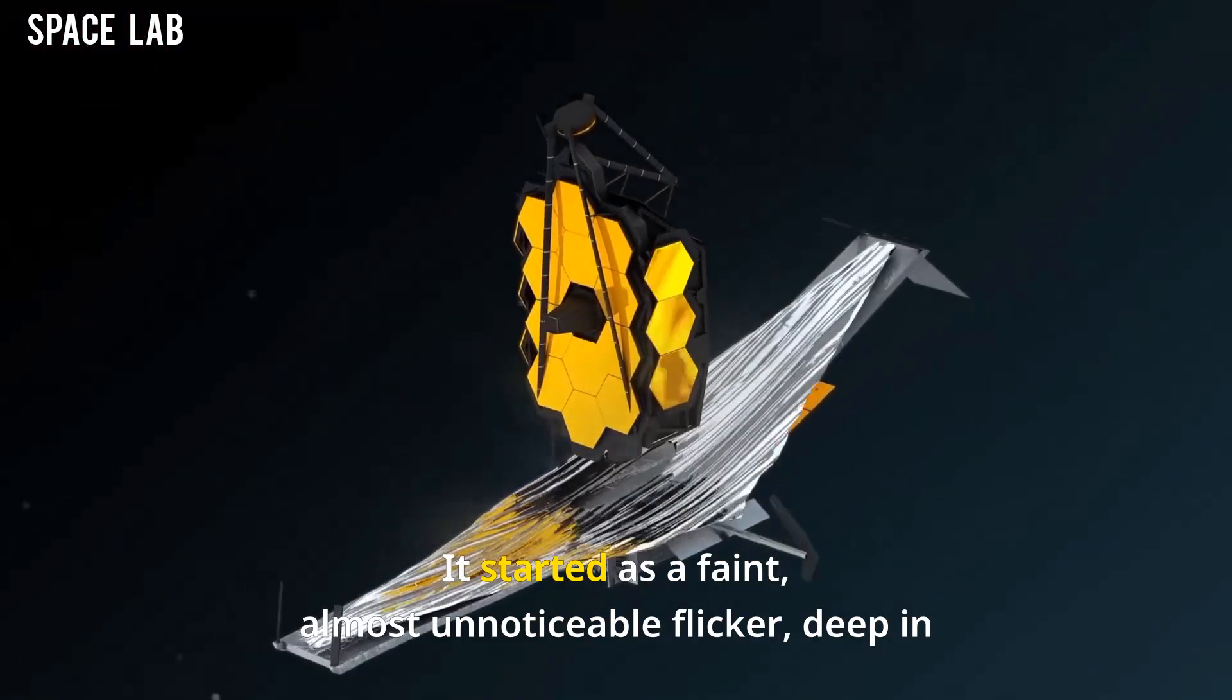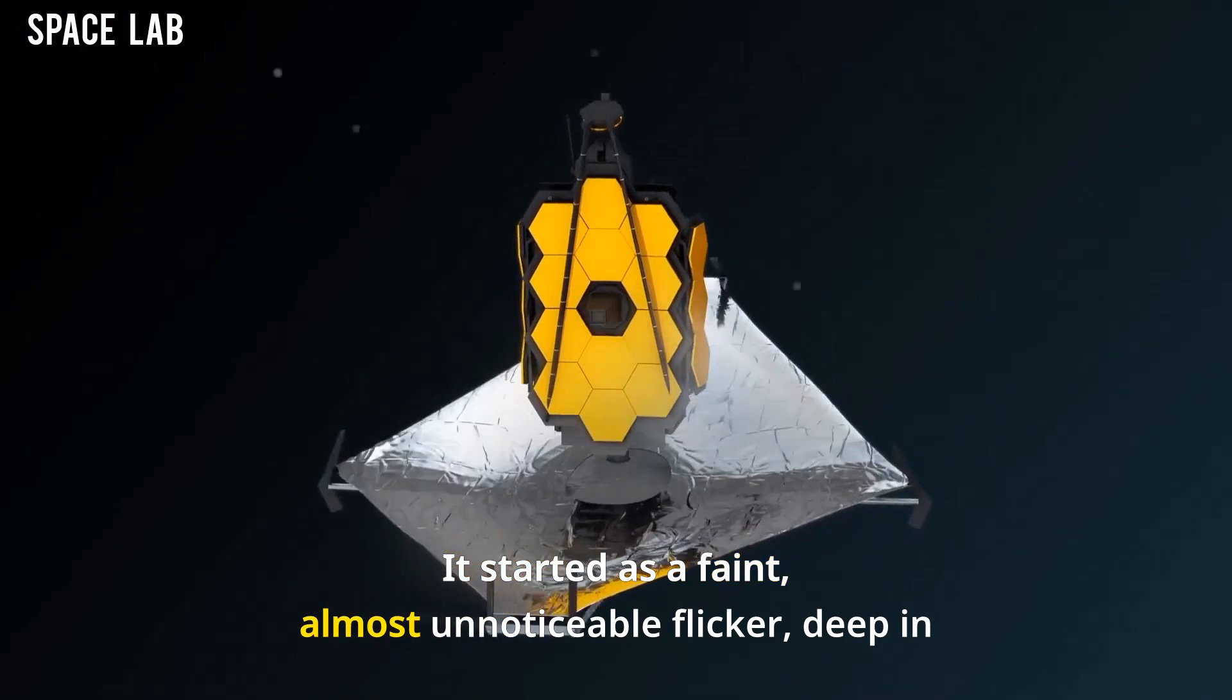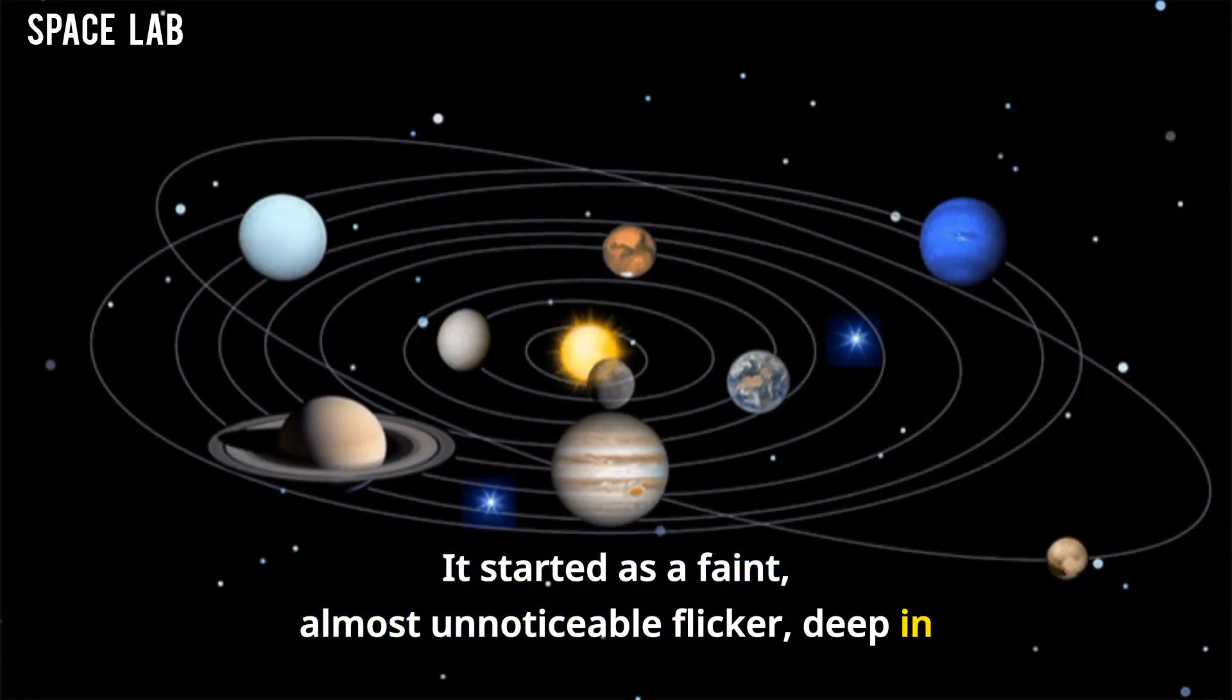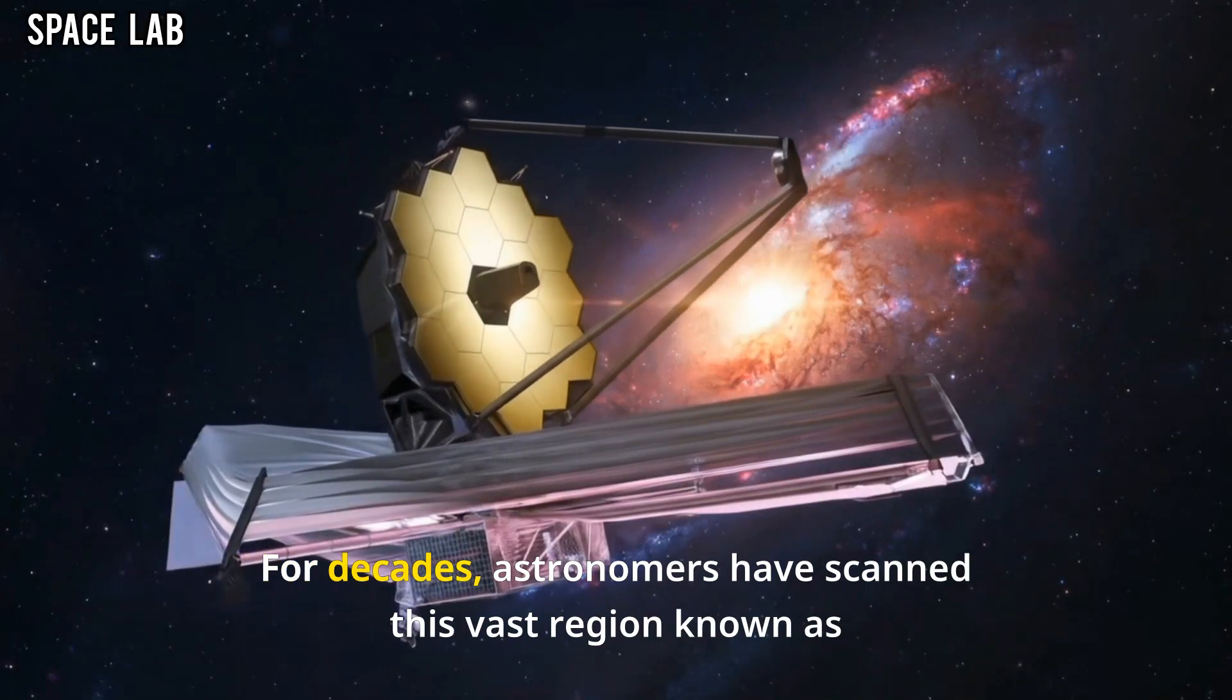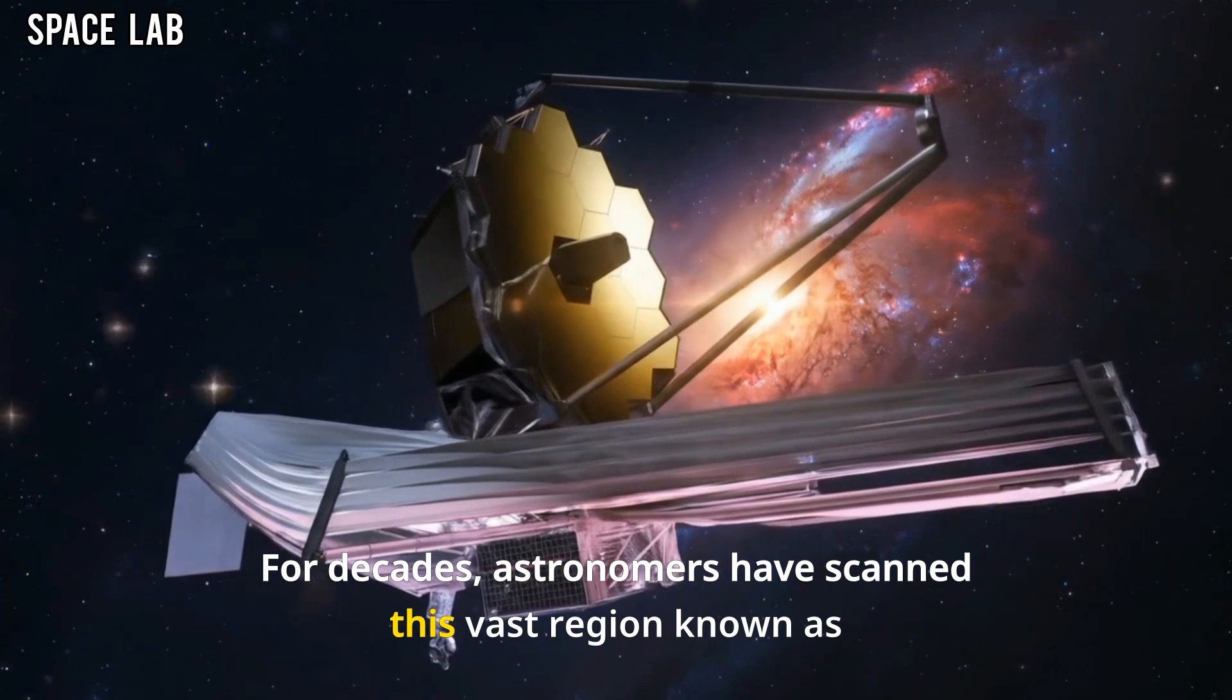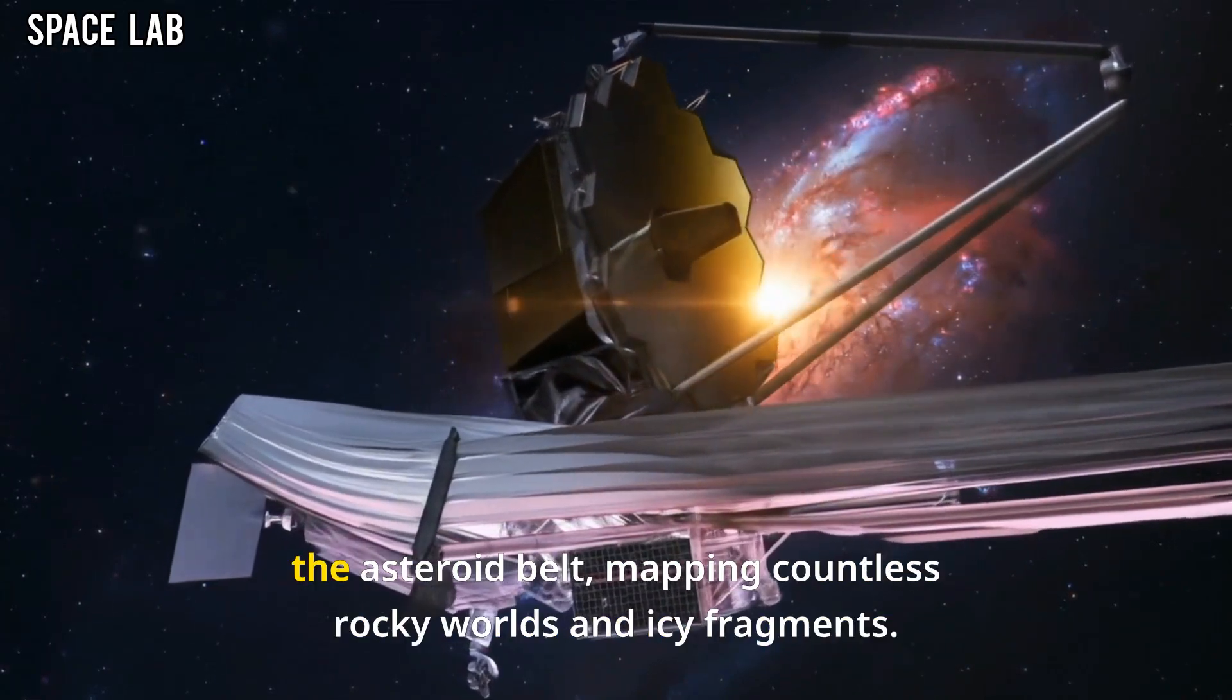It started as a faint, almost unnoticeable flicker, deep in the cold darkness between Mars and Jupiter. For decades, astronomers have scanned this vast region known as the asteroid belt.